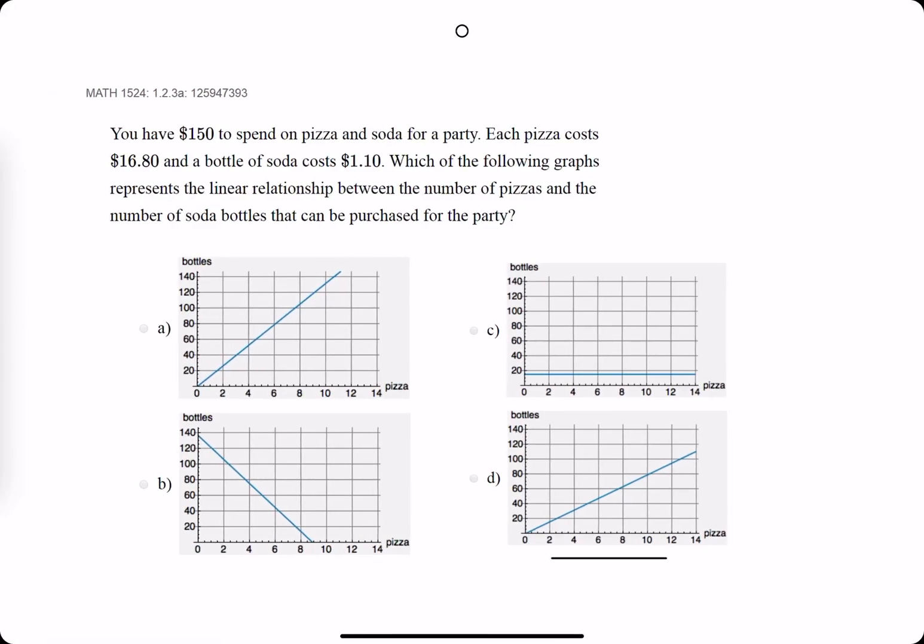Okie dokie. One more example for this one. We have $150 to spend on pizza and soda. Pizzas cost $16.80. Soda costs $1.10.